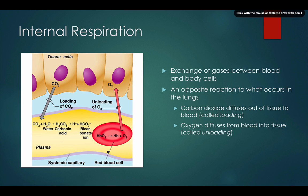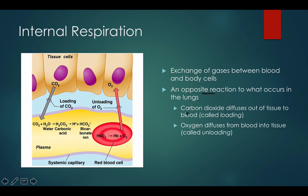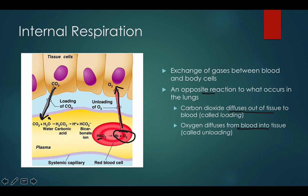Internal respiration is gas exchange occurring at the body tissues — not inside the alveoli, but between the blood and the body cells. It's the opposite reaction of what occurs in the lungs: carbon dioxide diffuses out of the tissue (loading) and oxygen diffuses from the blood into the tissue (unloading). Oxyhemoglobin separates into hemoglobin and oxygen, which diffuses out, while carbon dioxide diffuses in and combines with water to form carbonic acid and bicarbonate.